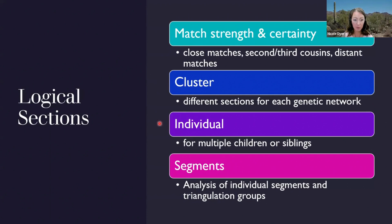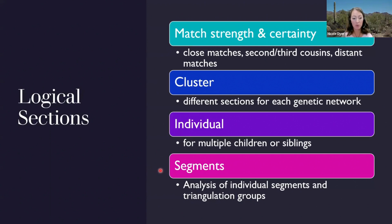You could also organize by individual or person — whether you're discussing multiple children, multiple siblings, or multiple candidates for a parent. Within each individual section, you could have documentary evidence and DNA evidence. Another option is segment analysis: if you want to break up your report into sections based on different triangulation groups and different individual segments that have been useful in identifying common ancestral couples and groups of matches.